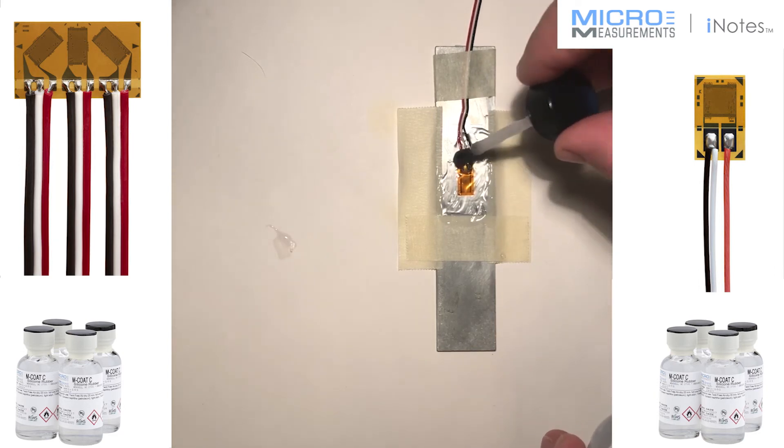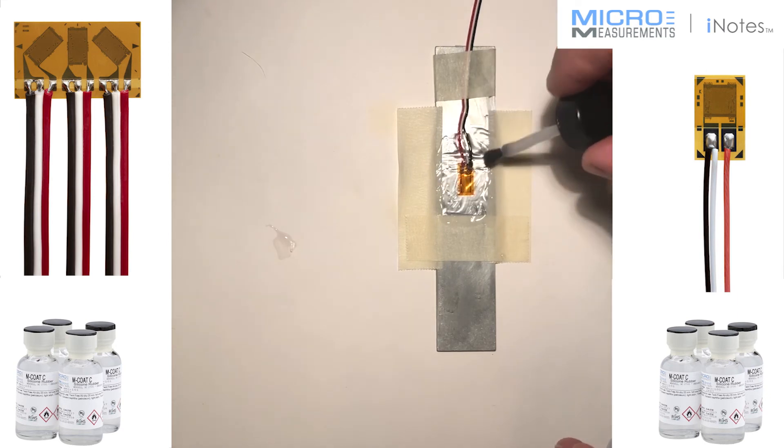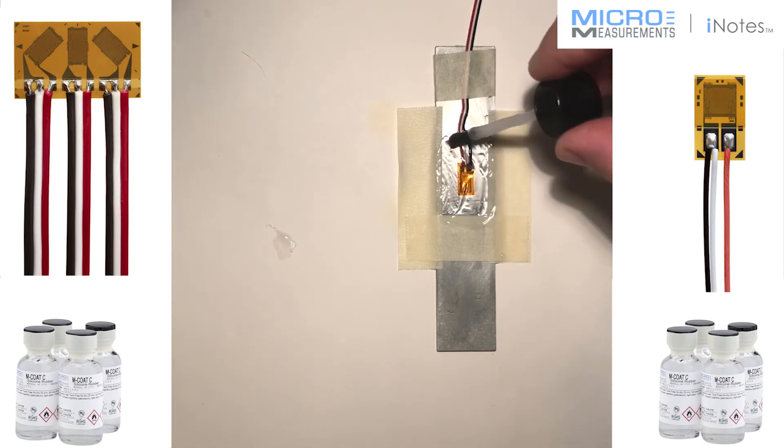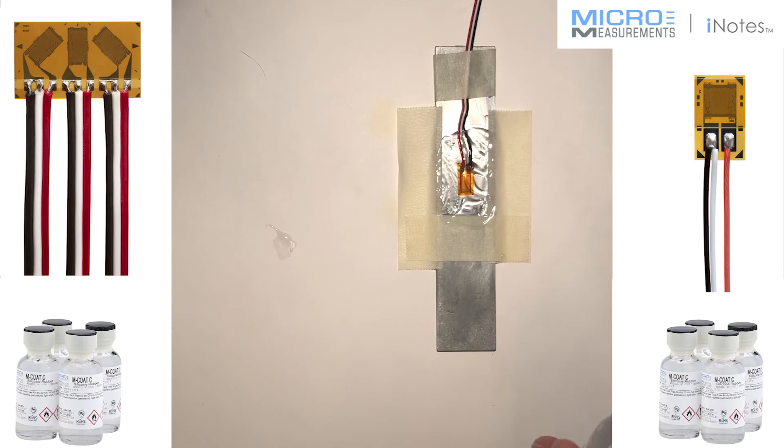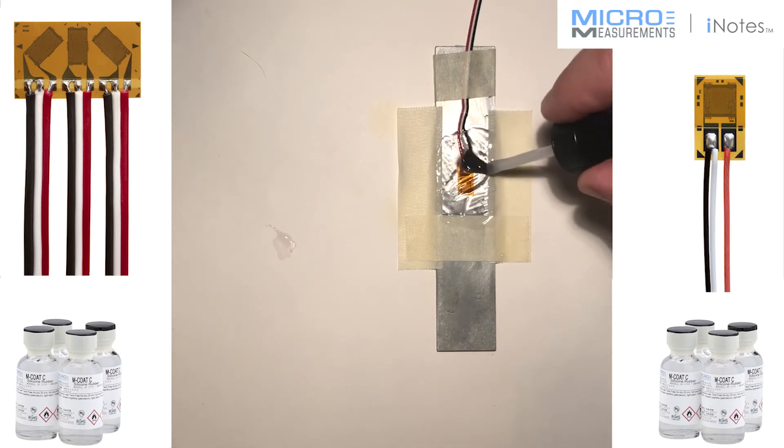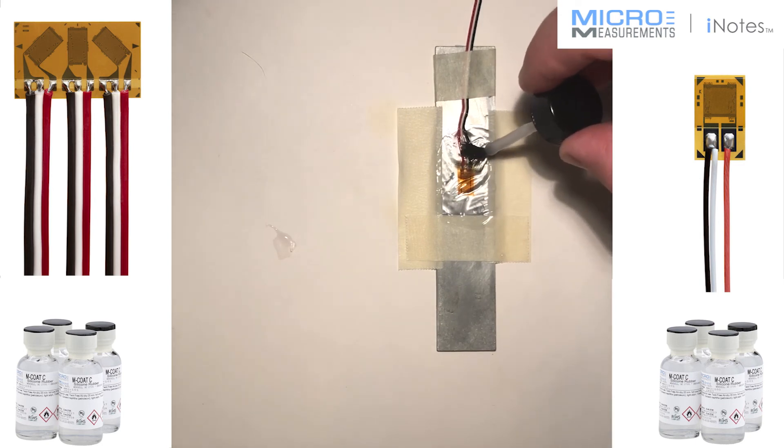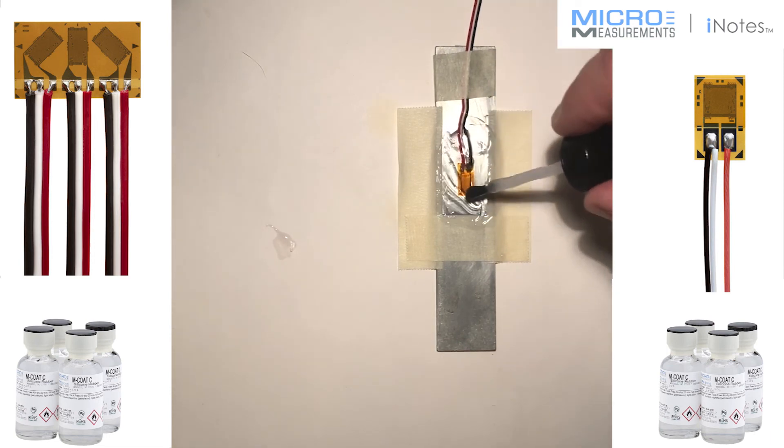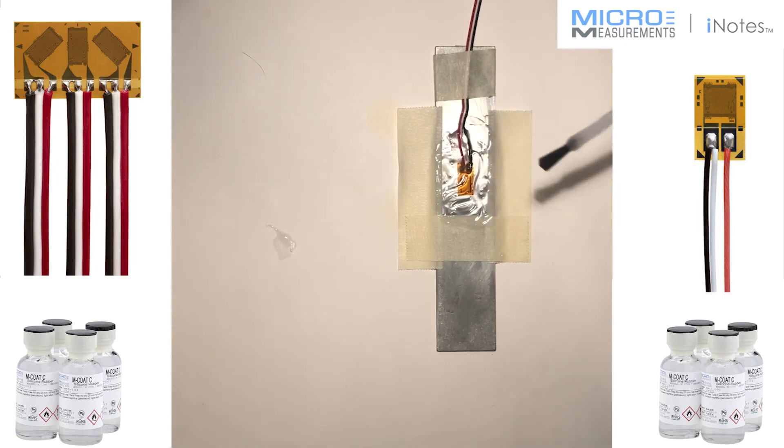and the reason for this is one of the greatest areas of water intrusion is the V grooves between the three wires. So by separating them out, it allows the coating to get in and around them and seal them off much better than if they were all together like they come.